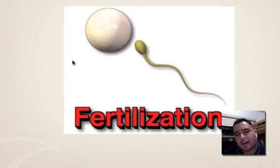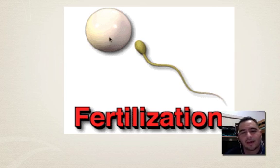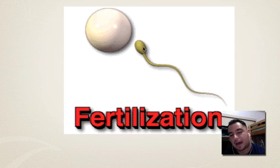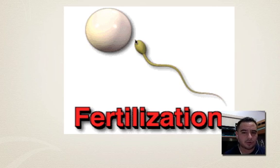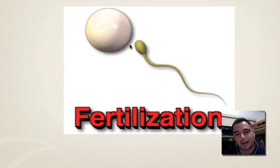The final thing that creates variety is fertilization. You have completely different genetic instructions from mom, and they're going to mix with completely different instructions from dad — two different organisms combining to produce a new, unique child. You get the best of mom and the best of dad, giving you all these new gene combinations.